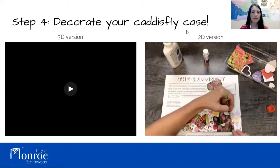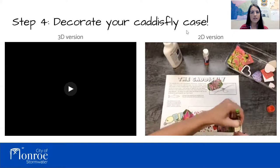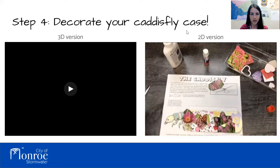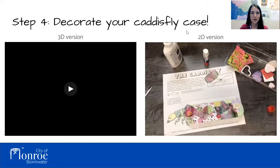Scientists and volunteers can sample streams where they collect, sort, identify, and count these macroinvertebrates to see which types they can find to judge the overall health of the stream. They are looking for high biodiversity, meaning many different types of macroinvertebrates, and higher quantities of pollution-sensitive individuals.